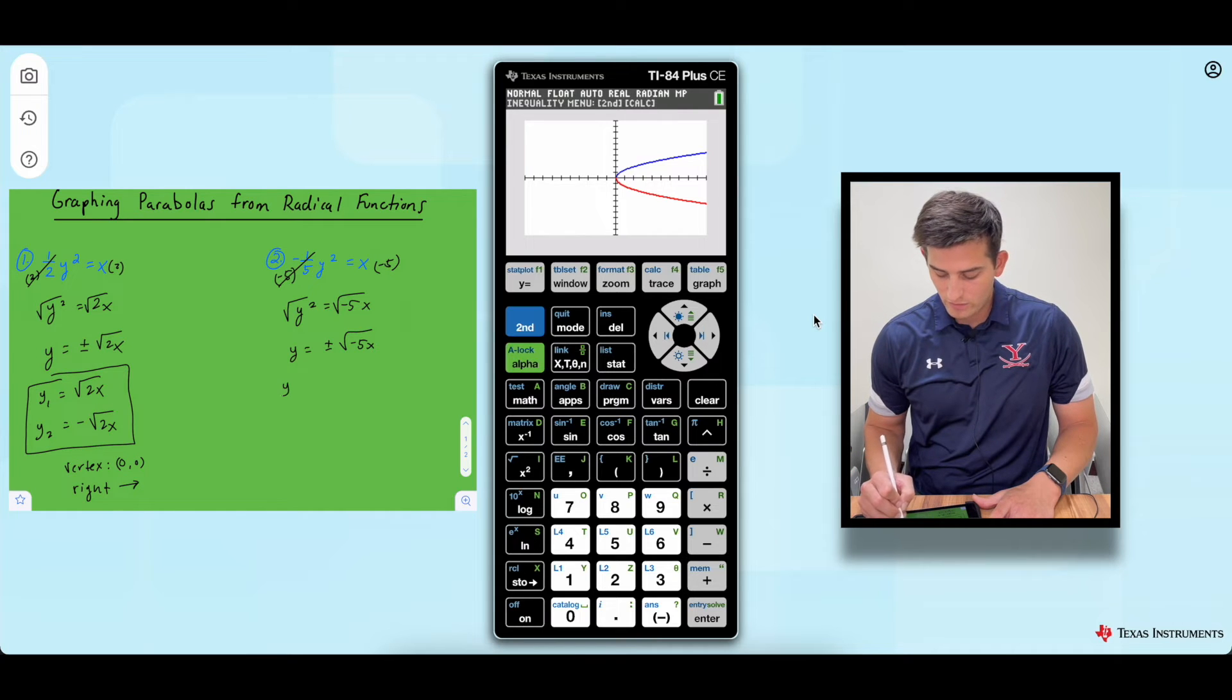So once again, in the calculator, y1, we're going to graph the square root of negative five x and y2, we're going to graph negative square root of negative five x. So those are the two equations we're going to graph.